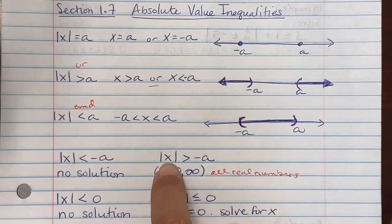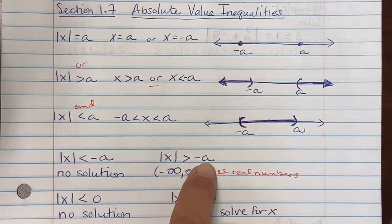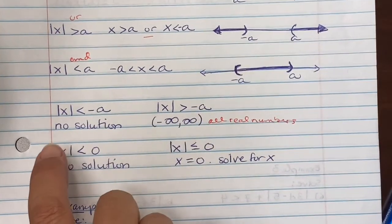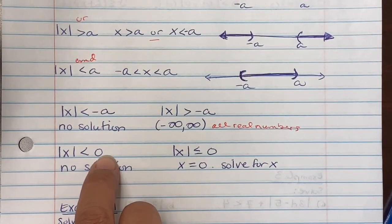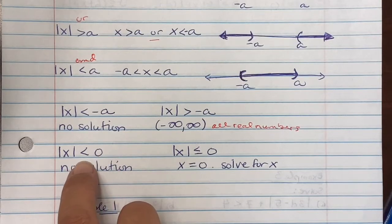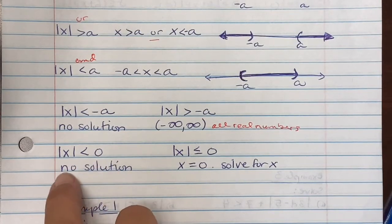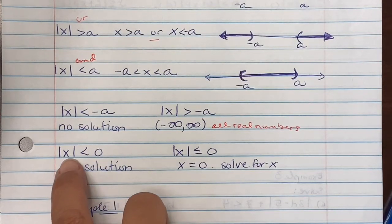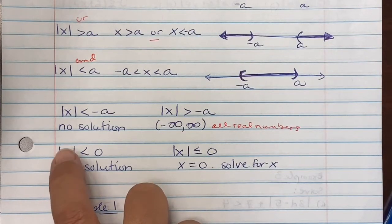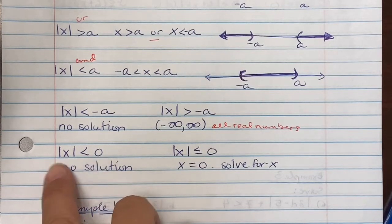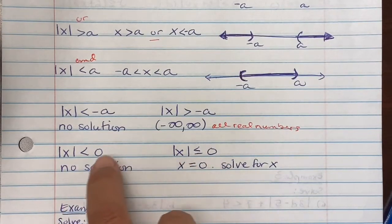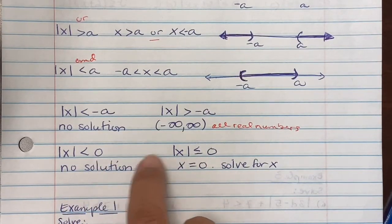Because if you stick a negative number in, it comes out positive, and a positive number will always be bigger than a negative number. If you see absolute value of x less than zero, the answer is no solution, because if you stick a negative number in it becomes positive — for example, negative one becomes positive one, and one is not smaller than zero.